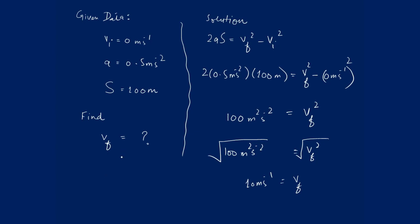As we have to find final velocity in kilometers per hour, not in meter per second, to convert this 10 meter per second to kilometers per hour, we have to multiply 10 meters per second with 3600 and divide it by 1000.